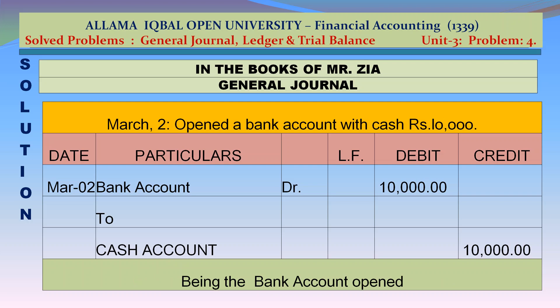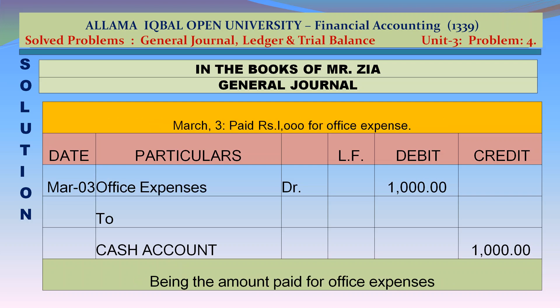March 2: Bank account debit Rs 10,000 to cash account credit Rs 10,000 — being bank account opened. March 3: Office expenses account debit Rs 1,000 to cash account credit Rs 1,000 — being the amount paid for office expenses.